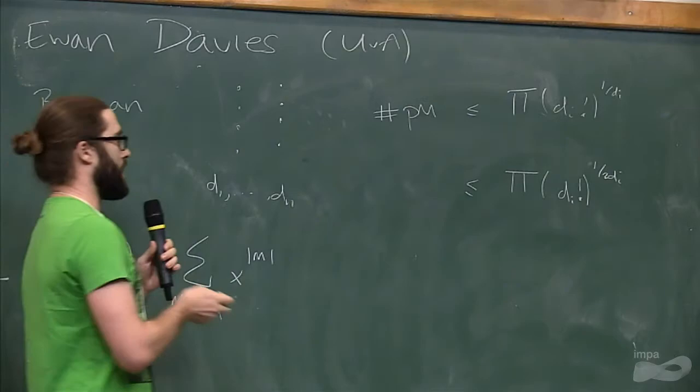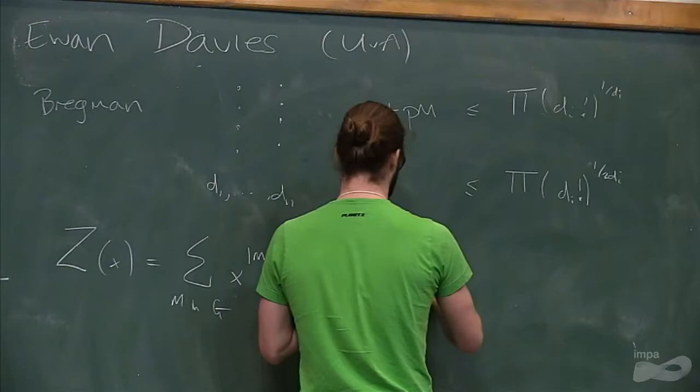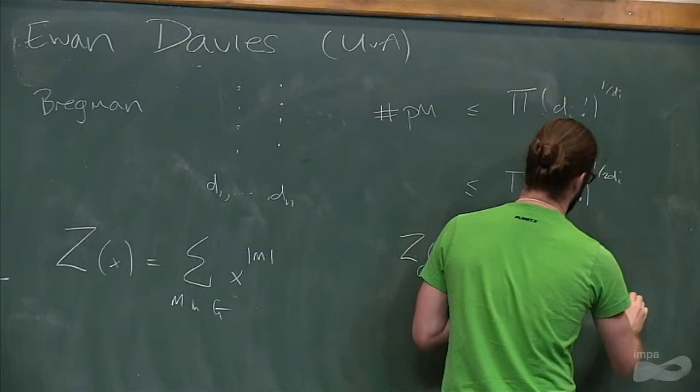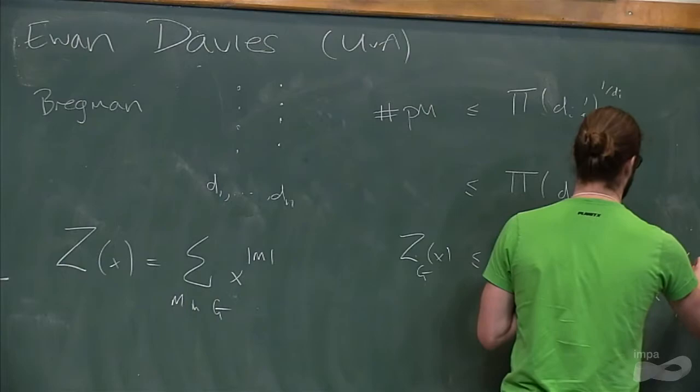So I'm sort of tempted to generalize this bound and say that Z(X) for some G should be upper bounded by, here I want to put a term which is the Z of a, I don't have good notation for this, but K_{Dᵢ,Dᵢ} with this normalizing factor here.